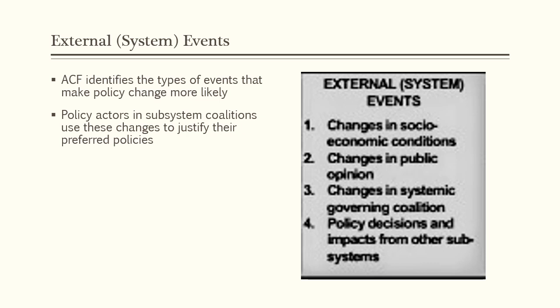Changes in public opinion can alter the balance of power between competing coalitions and open up the potential for policy change. Changes in systemic governing coalition has to do with the partisan balance in government and the platforms that winning candidates ran on. The fact that California has a Democratic legislature and a Democratic governor who ran on a platform of addressing the state's housing shortage makes it much more likely that policy change will occur. Housing is actually one of those issues where there are interesting coalitions across party lines, but under single-party control, the majority party is much more likely to work toward consensus — especially on an issue their leader in the governor's office has made a priority. Since they can't place blame on Republicans if they fail, Democrats have an extra incentive to come to agreement on housing policy change.